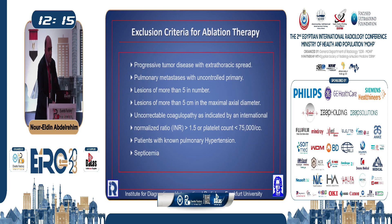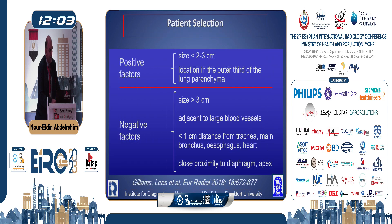The exclusion criteria are: progressive tumor disease or uncontrolled primary, lesions more than 5 in number or more than 5 centimeters, and also uncontrolled bleeding profile of the patients.